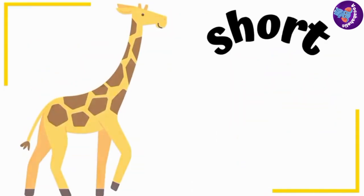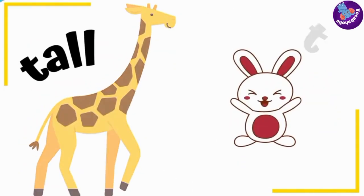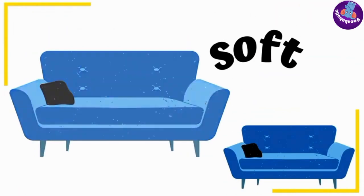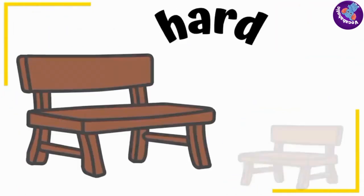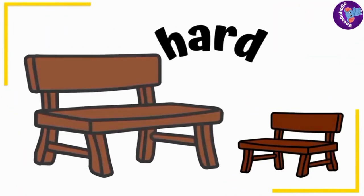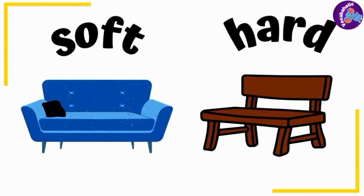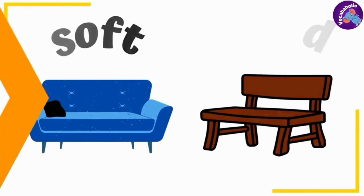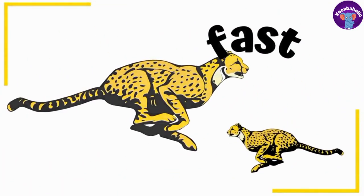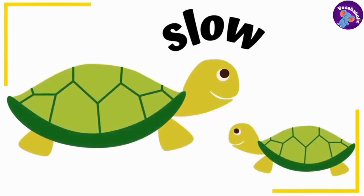Tall and short. Soft. Hard. Soft and hard. Fast. Slow.